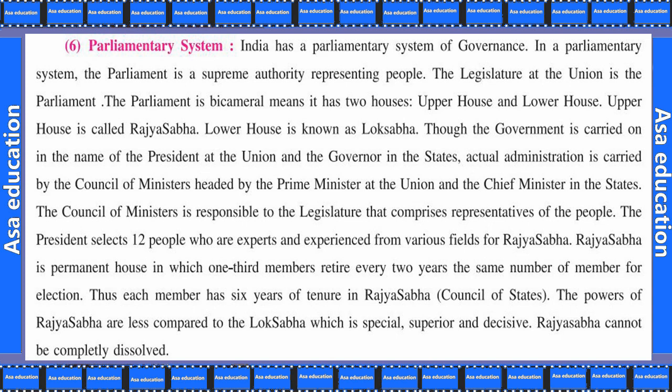The president selects 12 people who are experts and experienced from various fields for Rajya Sabha. Rajya Sabha is a permanent house in which one-third members retire every two years, and the same number of members go for election — thus each member has a 6-year tenure in Rajya Sabha. The powers of Rajya Sabha are less as compared to Lok Sabha, which is special, superior, and decisive. Rajya Sabha cannot be completely dissolved.